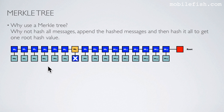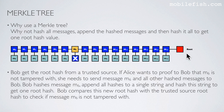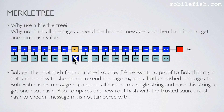Why use a Merkle tree? Why not hash all messages? Here are all messages — we hash them and append all hashed values together into a single string, then hash that string to get the root hashed value. Let's assume Bob gets this root hash from a trusted source. If Alice wants to prove to Bob that message m6 is not tampered with, she needs to send message m6 and all other hashed messages — these blue hashed messages — to Bob. Bob hashes m6, appends all the hashed messages into a single string, and hashes that string to get one root hash. Bob compares this new root hash with the trusted source root hash to verify m6. In this example, Alice has to provide 15 hashed values and message m6 to Bob.